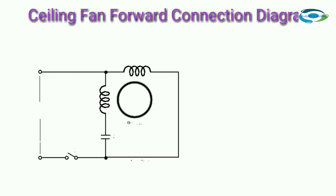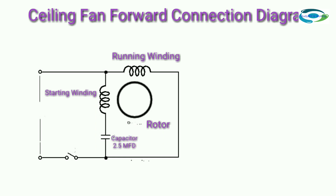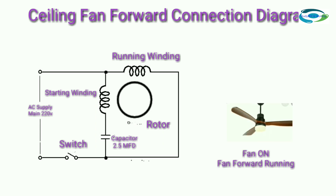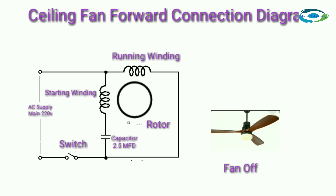Ceiling fan forward connection diagram: running winding, starting winding, rotor, capacitor 2.5μF, switch, 1.5μF, switch, AC supply 220V. Fan on — fan forward running. Fan off.